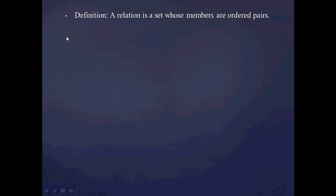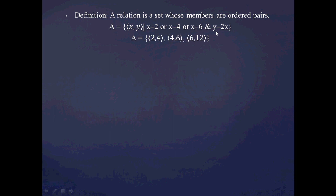So remember, this is going to be our definition for relation. As an example, let's say I have some relation A. In terms of set builder notation, this is going to be read as: A is all of the ordered pairs (x, y) such that x is equal to 2, or 4, or 6, and y has a relationship with x such that it's twice x. So what does that set look like? It's going to be the set of ordered pairs (2,4), (4,8), and (6,12). We can see that the x values, or the first component of the ordered pairs, have the relationship with y, or the second component, such that the y component is 2 times the x component.